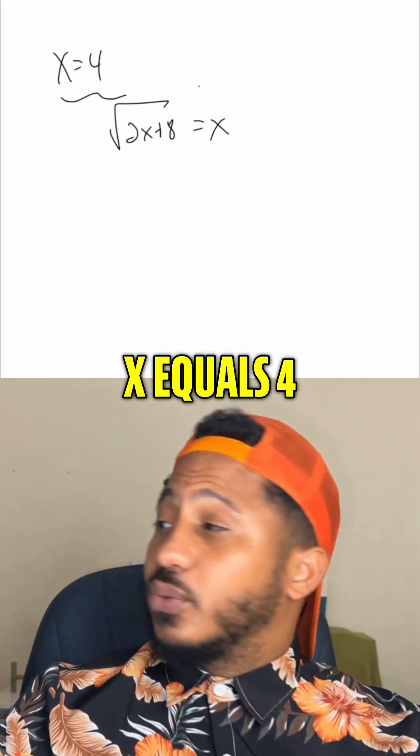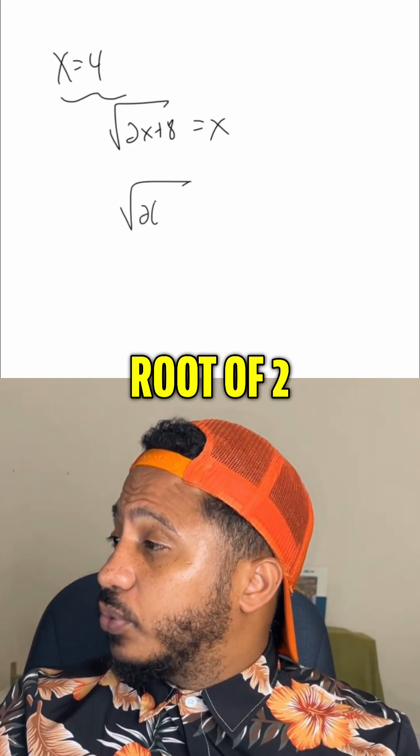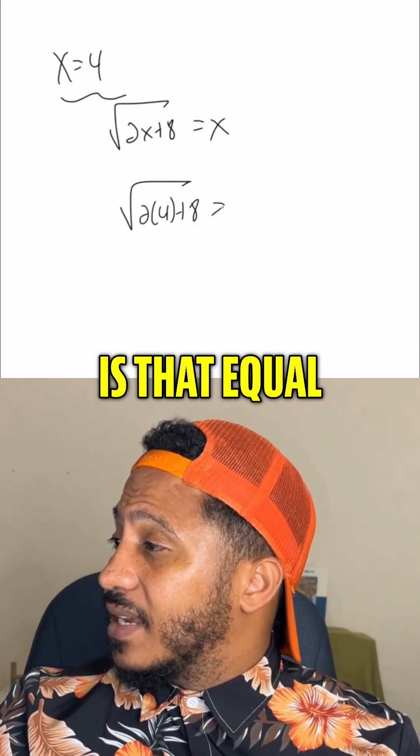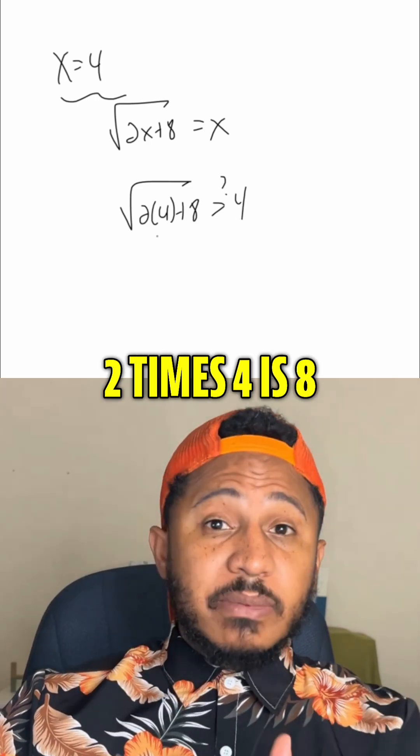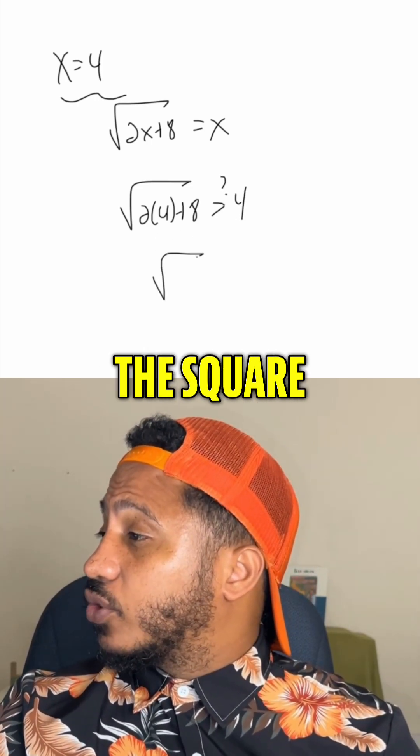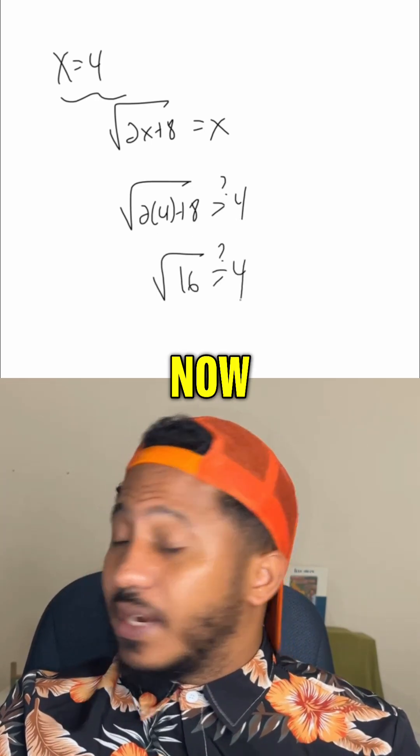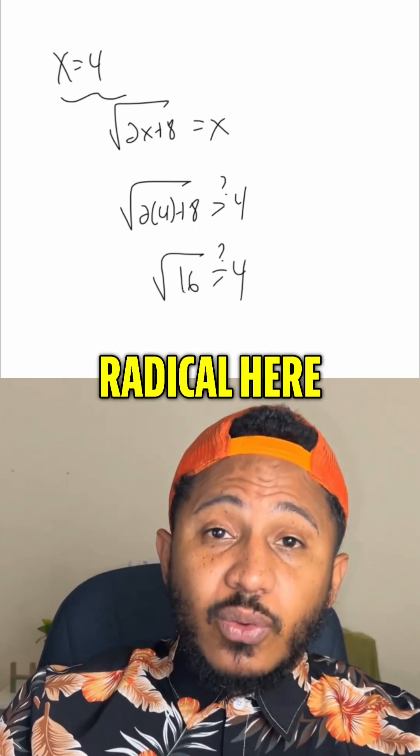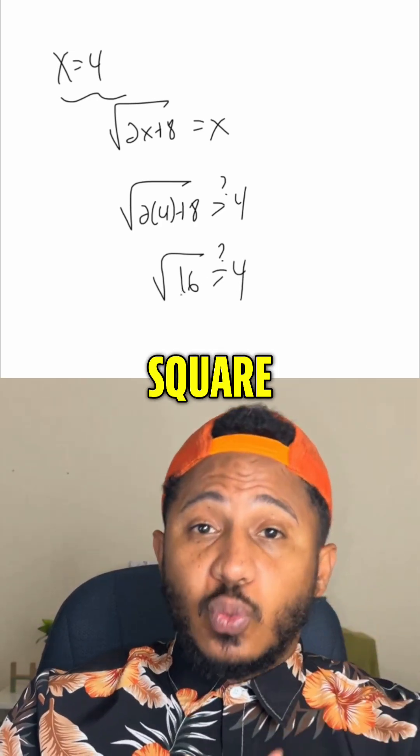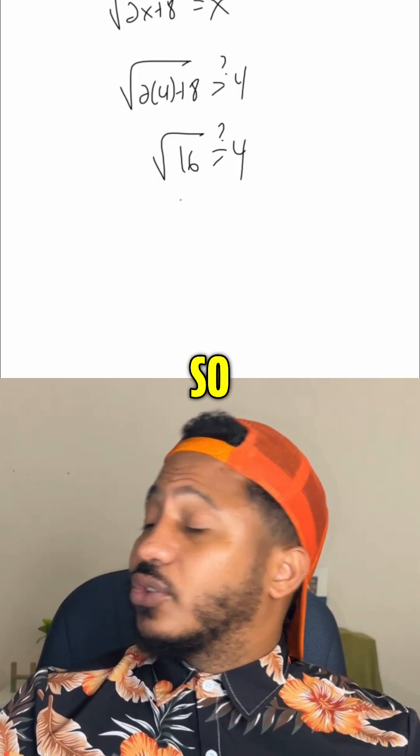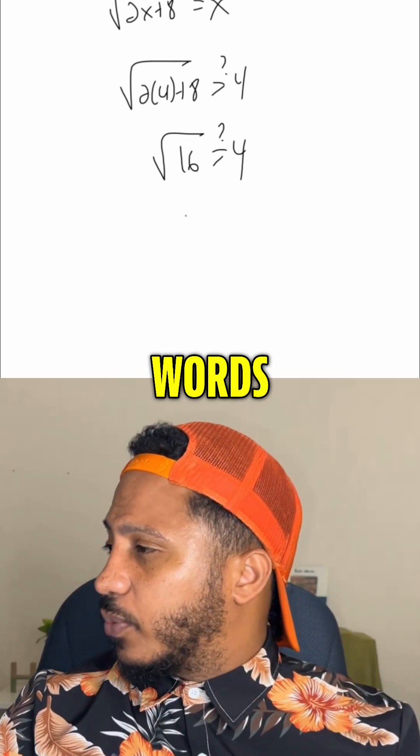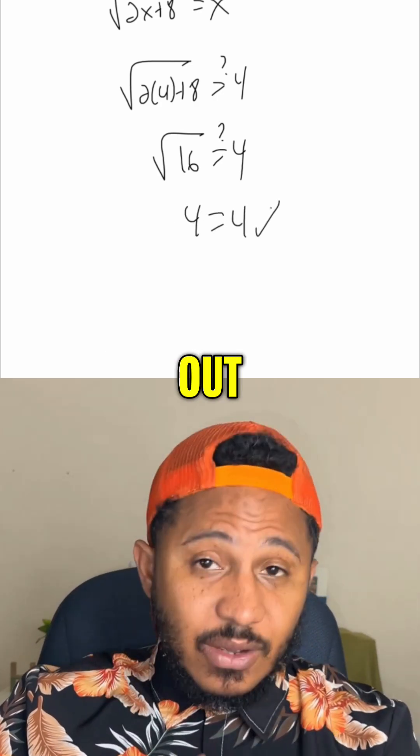So by plugging x equals 4 back into the original equation, we get the square root of 2 times 4 plus 8. Is that equal to 4? Well, 2 times 4 is 8, 8 plus 8 is 16. So the square root of 16. Is that equal to 4? Now, let's be careful. Since there's already a radical here, this means that this is the principal square root of that 16, the positive square root. In other words, positive 4 does equal positive 4. So that checks out.